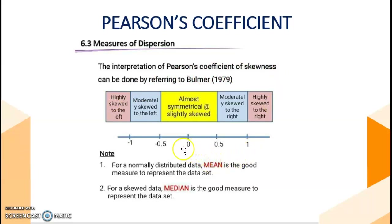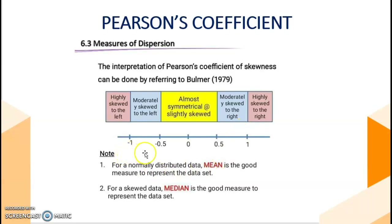If the value is from negative 0.5 until 0.5, the interpretation is almost symmetrical. If the value is from 0.5 until 1, the interpretation will be moderately skewed to the right. If the value is from negative 1 until negative 0.5, the interpretation will be moderately skewed to the left. For normally distributed data, mean is the good measurement; for skewed data, median is the good measure.